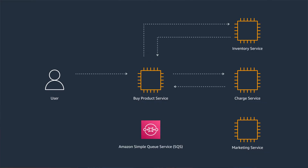How could you avoid problems like this? What about sending messages to an Amazon SQS queue to communicate with the marketing service? In that way, you decouple the services and return control to the customer quickly. Even better, if the marketing service is down, the messages are still in the queue until the service is back and ready to pick them up.